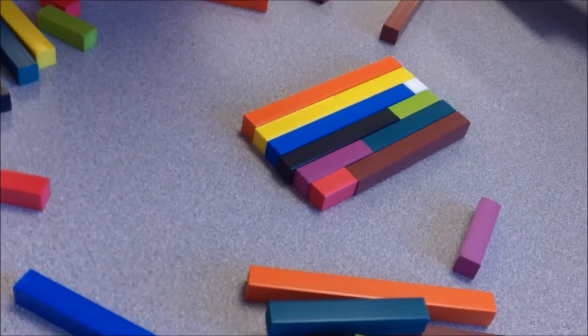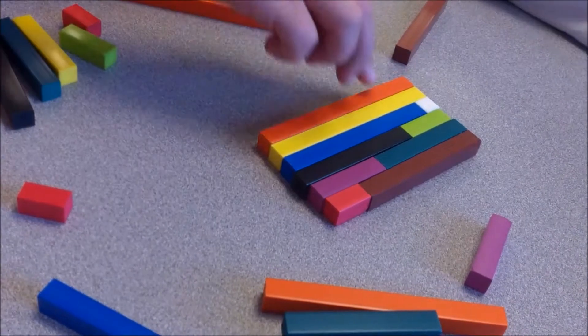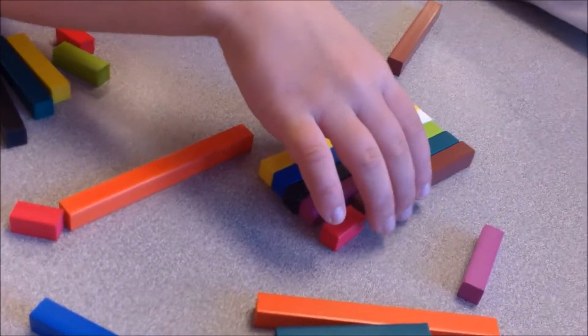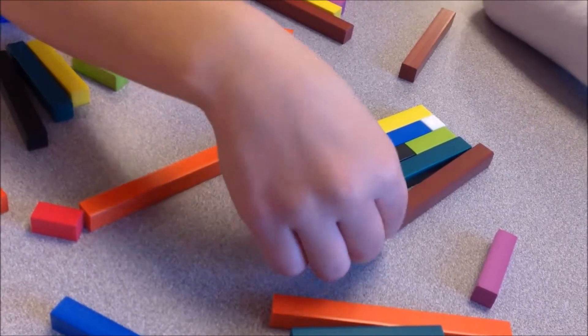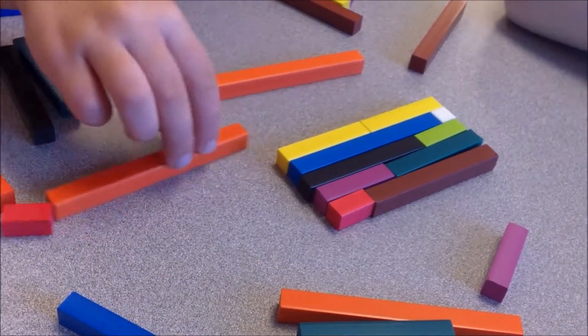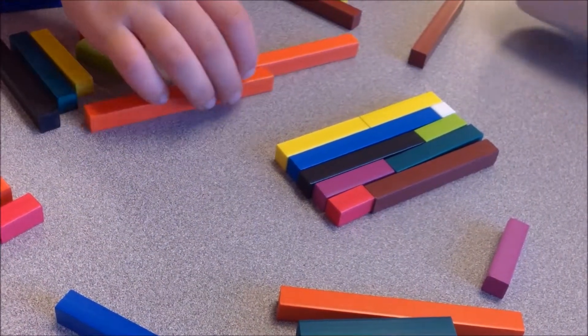Explain to me why you think you've got everything. I don't need it. Because all the ten colours are there. Oh, all the ten colours. So tell me what you've got so far. Five and five make ten.